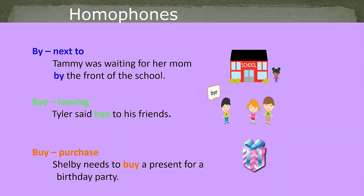More than two words can make a homophone. Here you have 'by,' 'bye,' and 'buy' — 'by' means next to, as in I live by the pool; 'bye' means see you later; and 'buy' means to purchase, as in I will buy a new car. Three different spellings, same pronunciation.